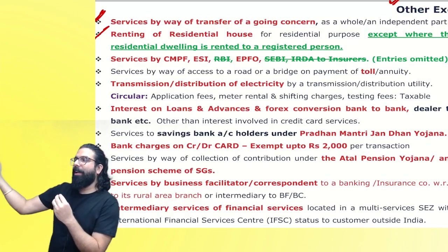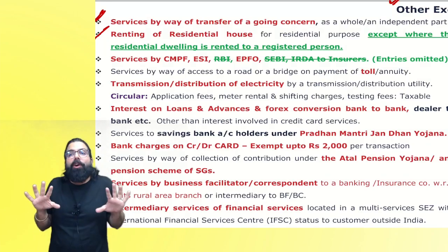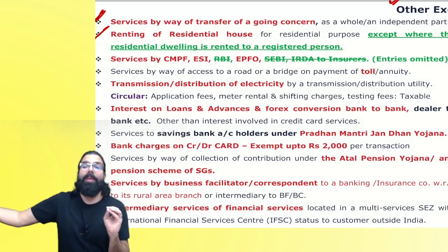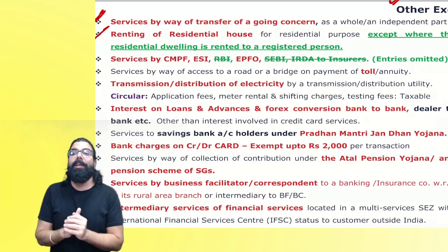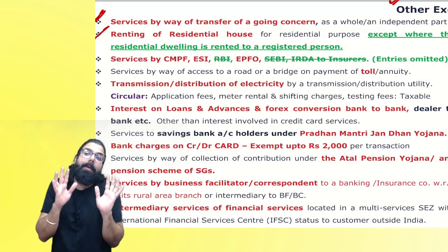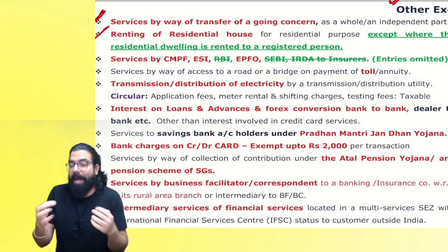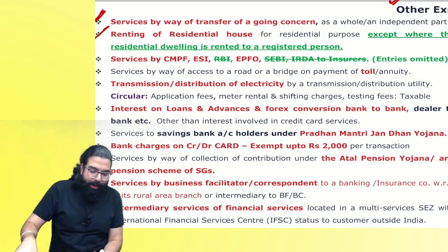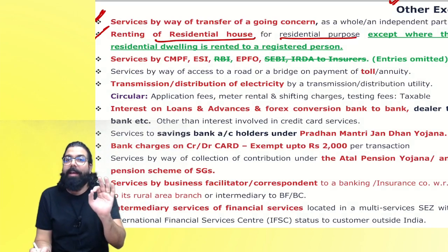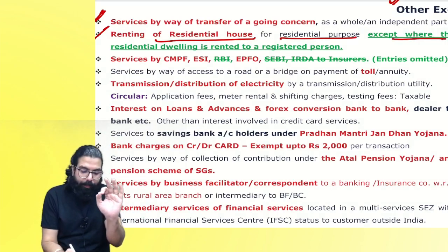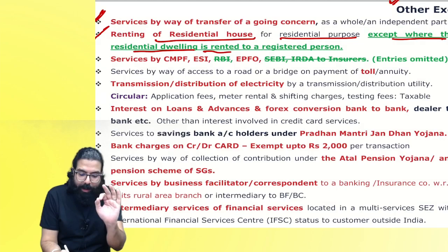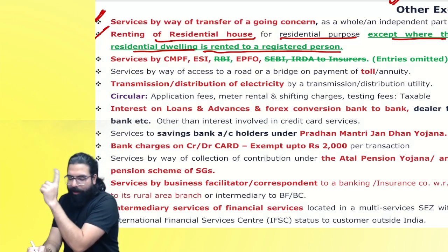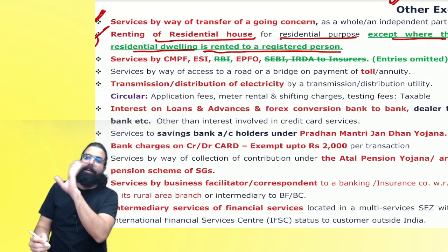Suppose my landlord gave me my home to stay and I am not a registered person — he won't charge GST. But if he gave it to me and I'm keeping my employees there or showing it as a business expense, then I'll have to pay GST under RCM. Always remember: renting of residential house for residential purpose is always exempt, but if rented to a registered person, that registered person will pay GST under RCM.